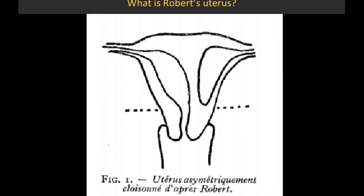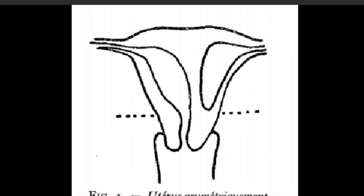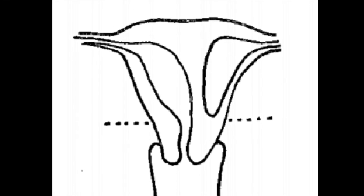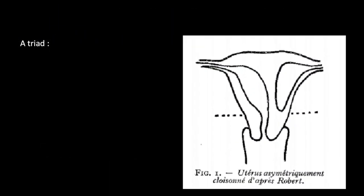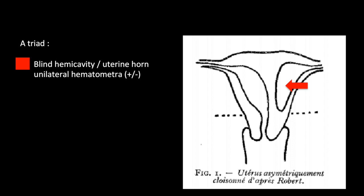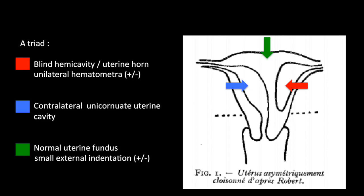The Robert's Uterus is an asymmetric septate uterus first described by Robert a half century ago. It connects functional and structural features of two classes of malformations: the unicornuate and septate uterus. There are a triad of morphologic features including a blind hemicavity, a contralateral unicornuate uterine cavity, and a normal uterine fundus.